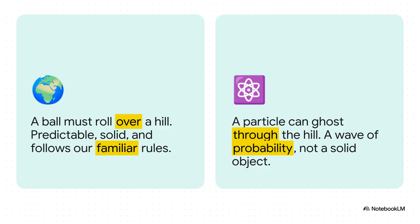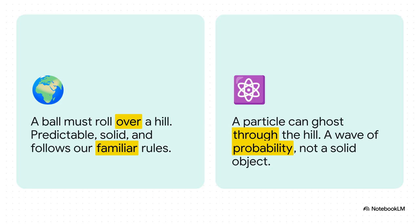But in the quantum world, a particle isn't really a solid thing. It's more like a wave of possibilities. And because of that, it can do something impossible. It can just ghost or tunnel straight through the hill. It's playing by a totally different set of rules. And that led to the million-dollar question for experimental physics at the time.